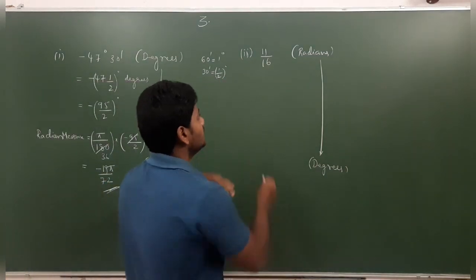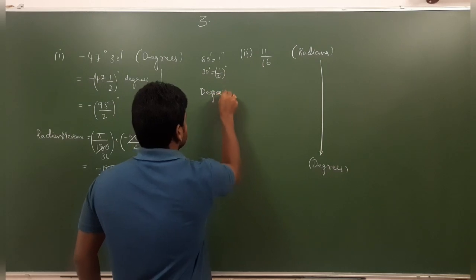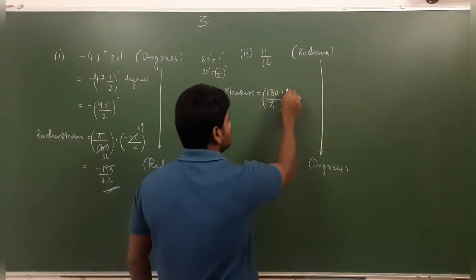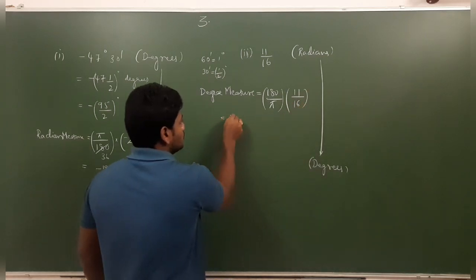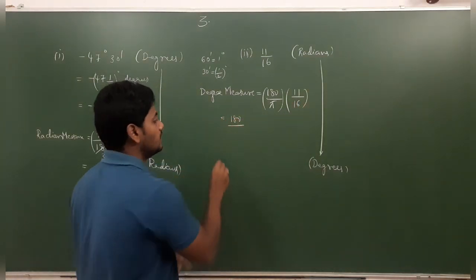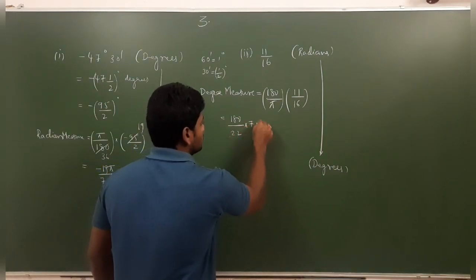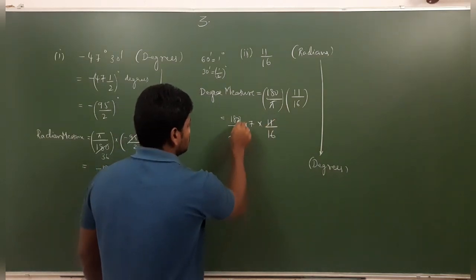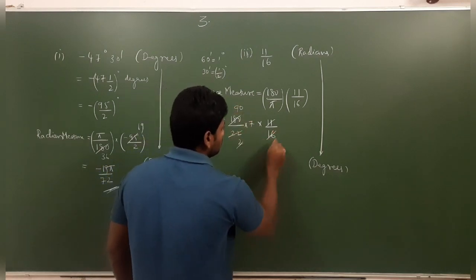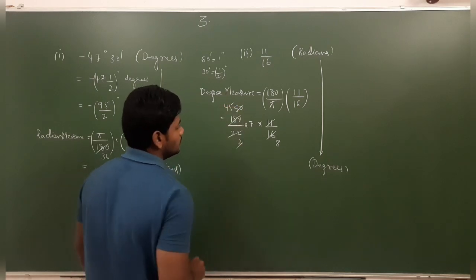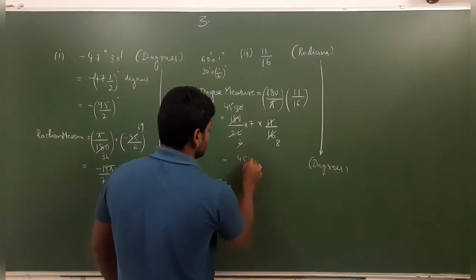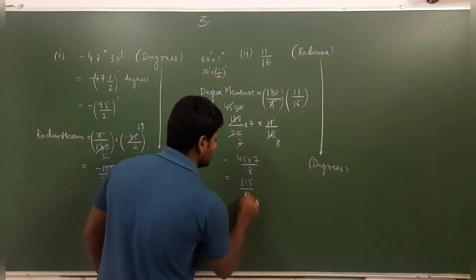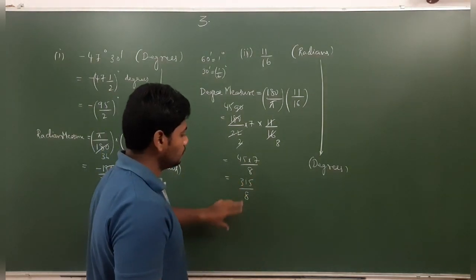Next example: 11π/16 radians, convert to degrees. We use the degree measure formula: multiply by 180/π. So 180/π × 11/16, substituting π = 22/7 gives (180 × 7 × 11) / (22 × 16). After cancellation, we get 315/8 degrees.